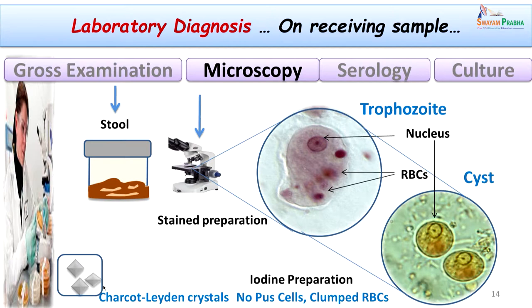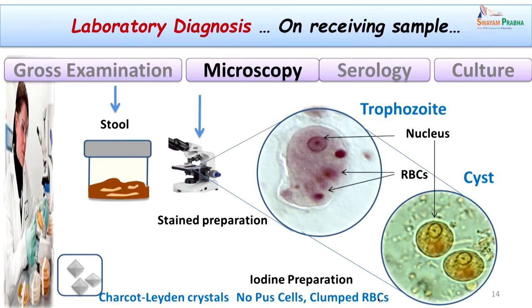In the wet mount examination there were not many pus cells, which is in contrast to bacillary dysentery. We also see clumped RBCs in a roll-formation in bacillary dysentery. These important findings supported our clinical diagnosis of amoebic dysentery, and we named the probable parasite as Entamoeba histolytica.